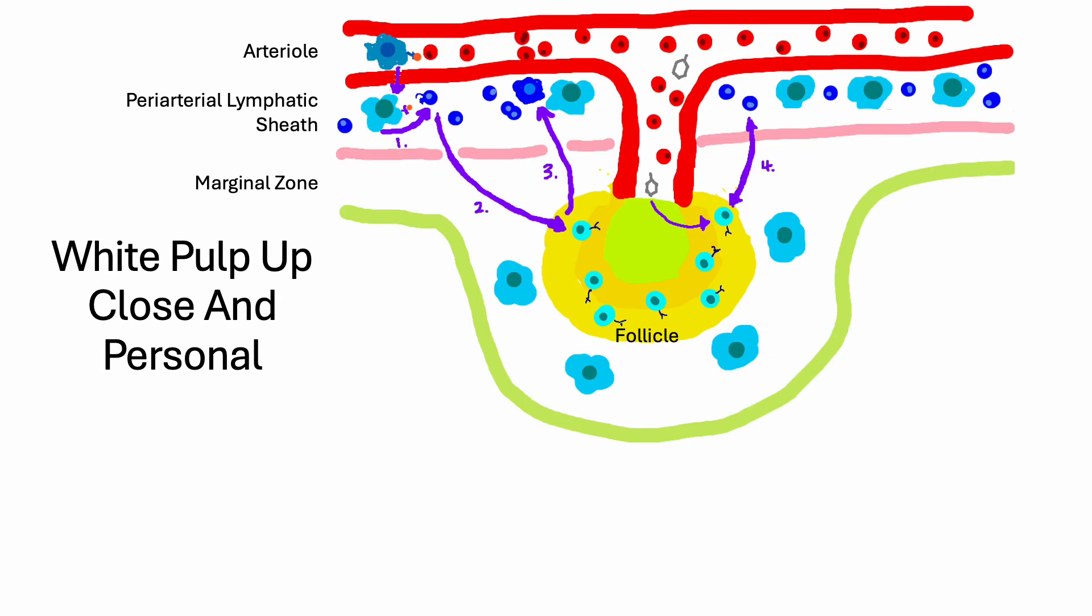Up close and personal on the white pulp here. Antigen-presenting cells arriving at the spleen with a foreign antigen present it to T cells in the periarterial lymphatic sheath. Here you see it at number 1. These cells then become activated. T cells then activate the B cells in the follicles, seen as number 2.